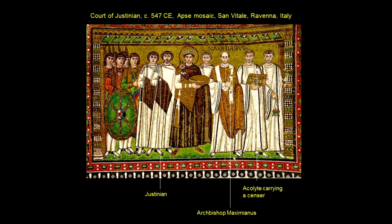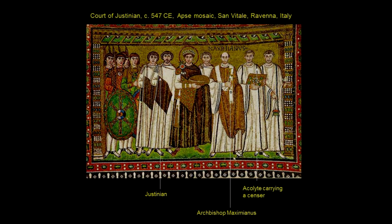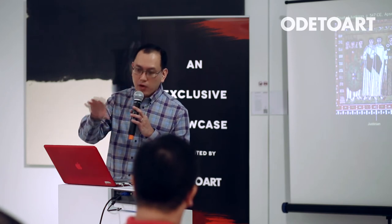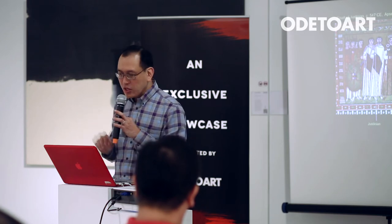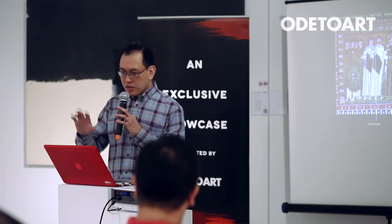Justinian was a person responsible for recapturing many of the territories that were lost in the Western Roman Empire. The Byzantine Empire is actually an Eastern Roman Empire, and Justinian helped to re-conquer many of these territories, including some in Italy. This mosaic can be found in the apse — a part of the church. It comes in a pair: on one side Justinian, and on the other side is a mosaic of his wife with her own retinue.